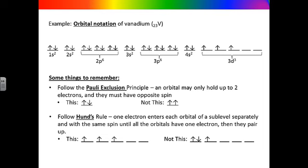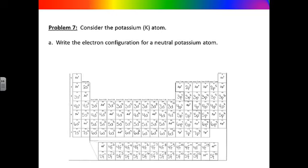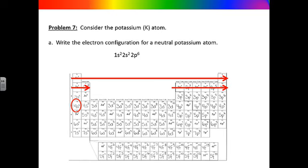This is called Hund's rule. Consider the potassium atom. Potassium is element number 19, meaning it has 19 electrons. We must place these electrons in order according to the Aufbau principle. The correct order is 1s2, 2s2, 2p6, 3s2, 3p6, 4s1. If you add up the superscripts — 2 + 2 + 6 + 2 + 6 + 1 — they add up to 19, the correct number of electrons in potassium.